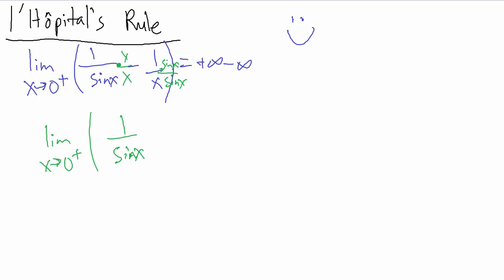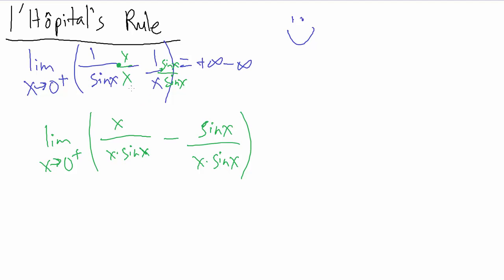What does that give us? On the bottom, that's going to give us x times sine of x. Remember the minus sign, and then minus one over x times sine of x over sine of x gives us just sine of x on top and x times sine of x on the bottom. So all we did was take our original expression and get a common denominator. That gives us the limit as x goes to zero from the positive side of x minus sine of x on top, over x times sine of x on the bottom.